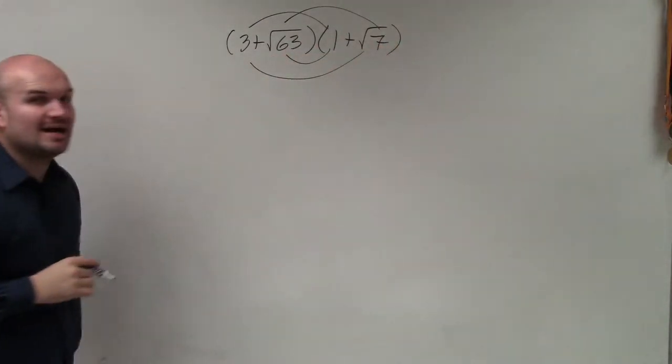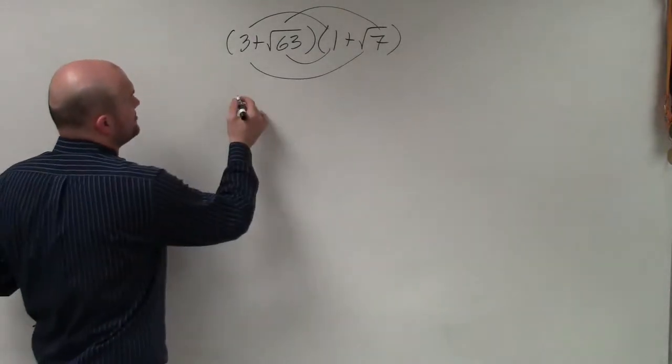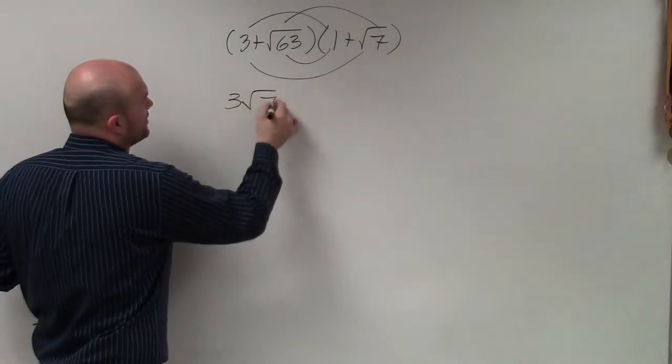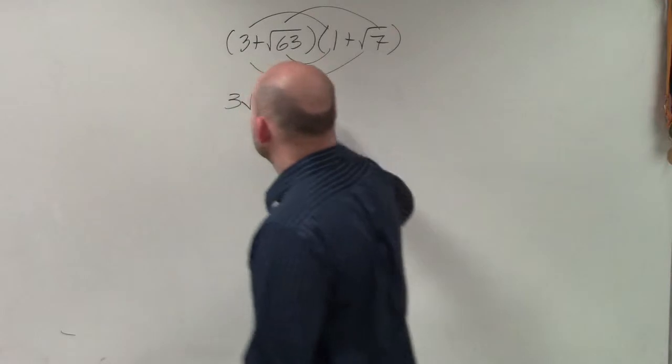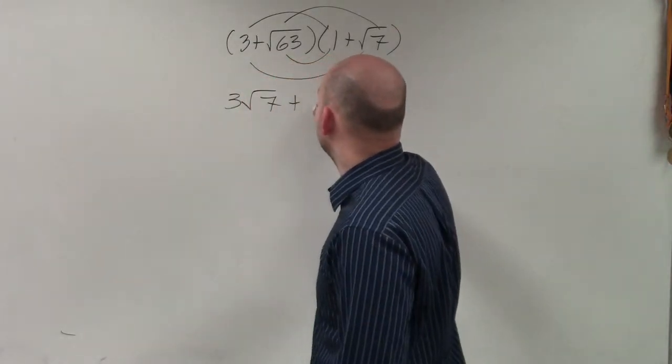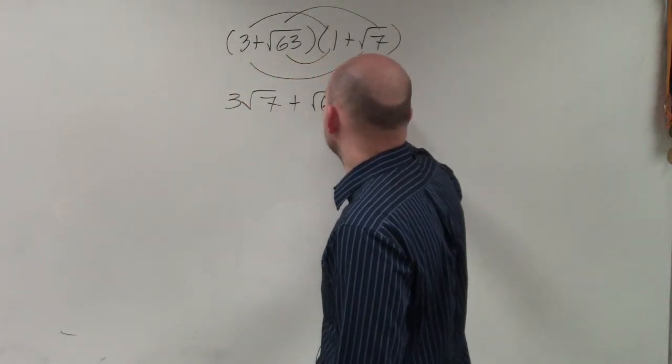So to remind ourselves, 3 times the square root of 7 is going to be 3 square root of 7. 1 times the square root of 63 is going to be 1 times the square root of 63, so it would just be square root of 63.